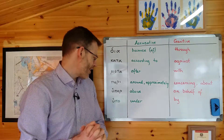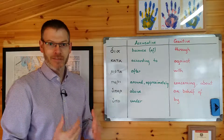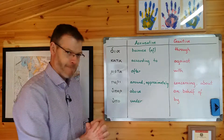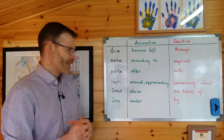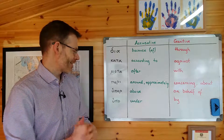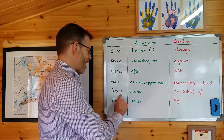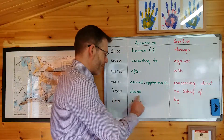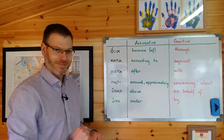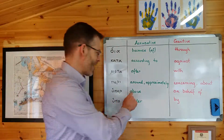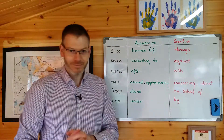Number five: huper. Huper sounds a bit like 'hyper' — in fact, it's the word from which we get 'hyper.' My first baby was on the way. My lovely wife Nicole was groaning under the fear and contractions. So I drove hyper fast, above the speed limit, on behalf of my wife. I drove to the hospital hyper fast, above the speed limit, on behalf of my wife.